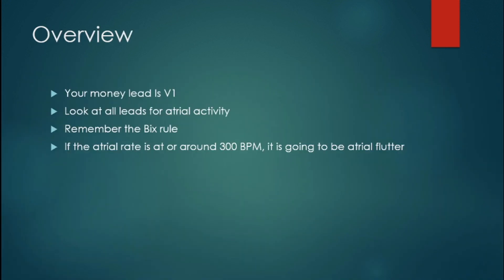Here's the overview. Remember the first lead you look at for atrial activity is V1 — your money lead — but it's not a 100 percenter, so always scour the whole 12-lead. Remember the Biggs rule: if you see atrial activity directly in the middle between two QRS complexes, there's likely hidden atrial activity inside the QRS complexes as well. Finally, if the atrial rate is at or around 300 and marches out perfectly, it's going to be atrial flutter. Atrial flutter is one of the most misdiagnosed rhythms, but with these tricks you can diagnose it confidently. Hope you enjoyed this lecture — have a great day!